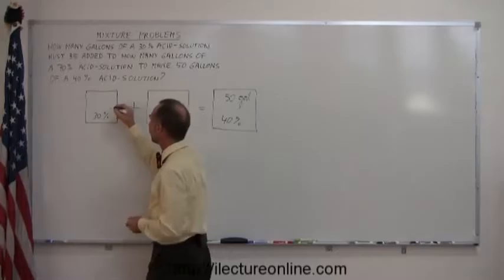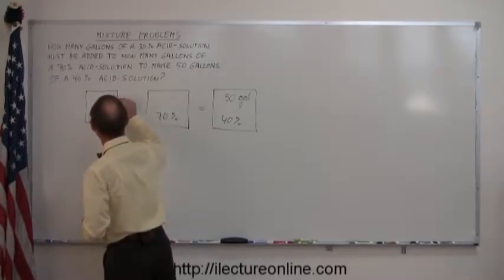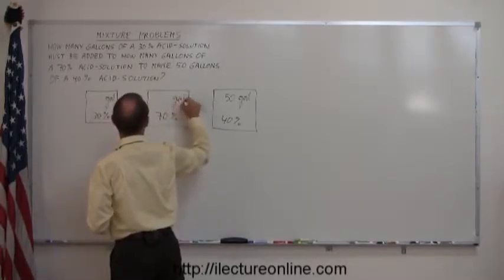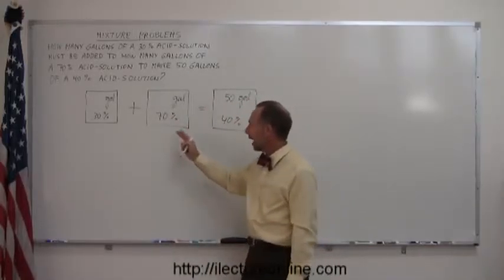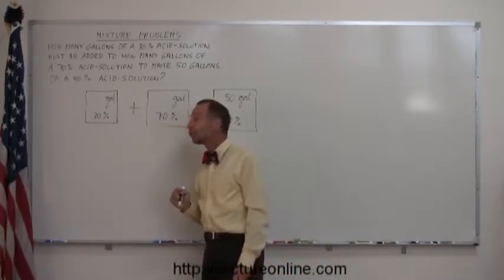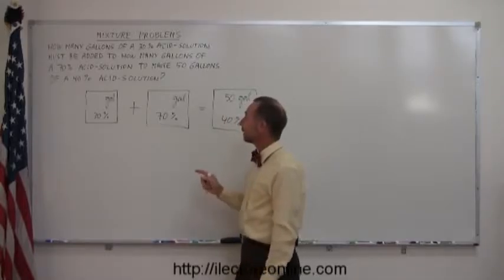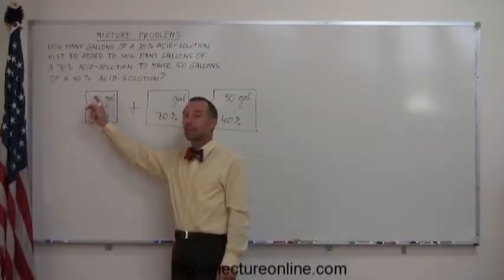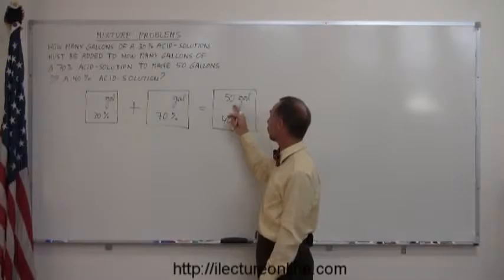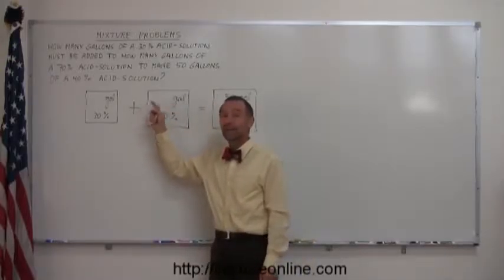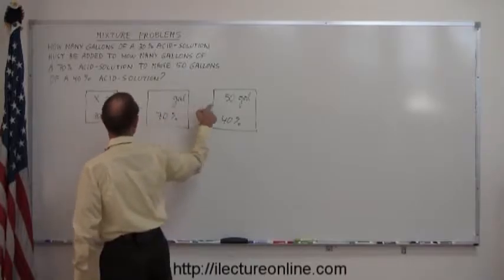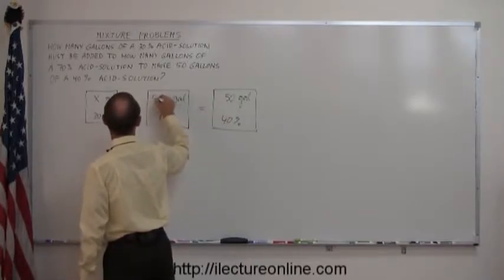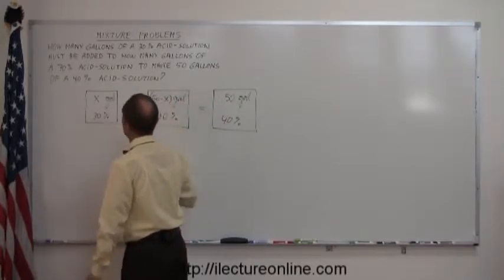So, how many gallons do we have here? And how many gallons do we have here? Now, if there's two different kinds of solutions you're adding and you don't know how much of each you use, you typically let x be the amount you have of the one solution and the total minus x be the amount you have of the other solution. So, this you write in x gallons of that solution and the total 50 minus x be the amount of the other solution.